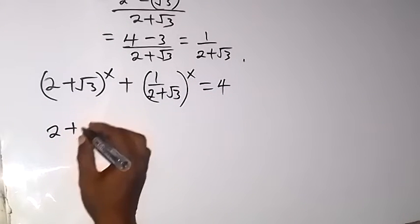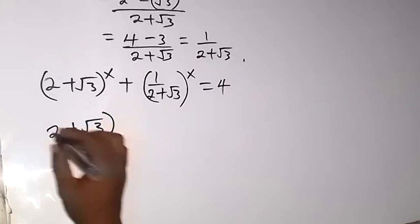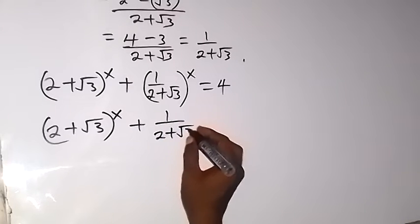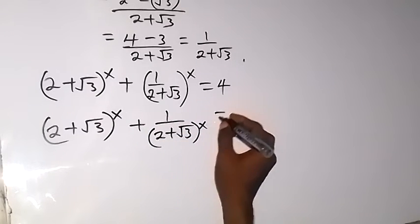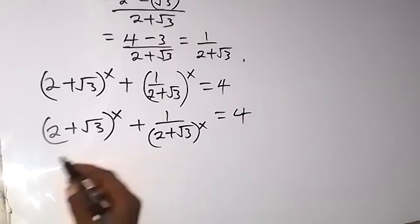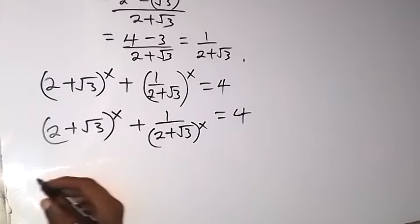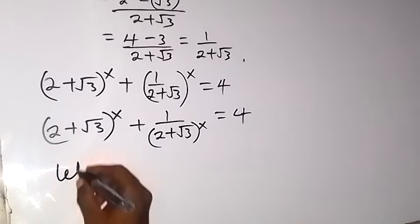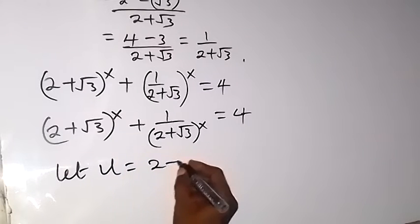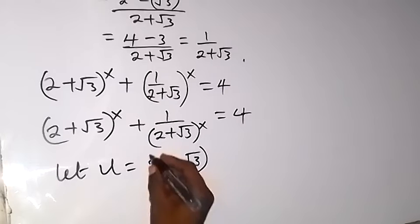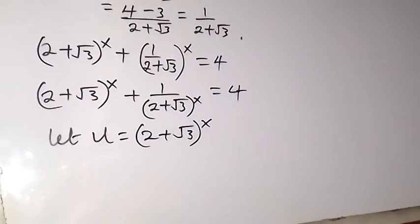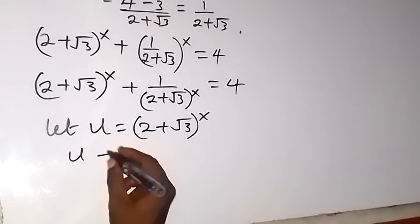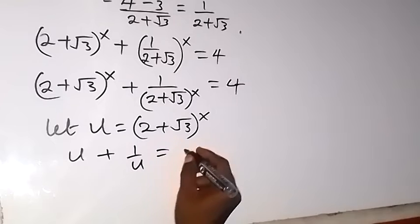We can write it again as 2 plus root 3 all raised to power x, then plus 1 over 2 plus root 3 all raised to power x, equals to 4. Now let's make this equation simpler by letting u equal 2 plus root 3 all to the power of x. Then we can write the equation as u plus 1 over u equals to 4.